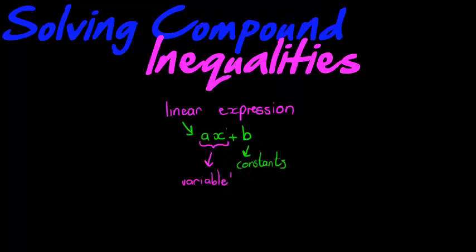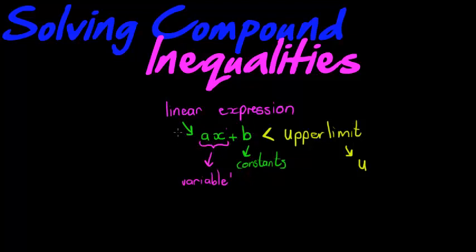The next part of a compound inequality is that it is an inequality. There is a smaller-than sign, and the smaller-than sign has an upper limit. This upper limit would be a constant — a number like 10. And this expression will also be bigger than another number, so we will have a lower limit. We will have an upper limit, a constant number, and a lower limit, a bottom number.